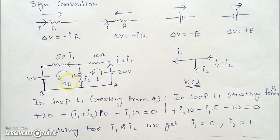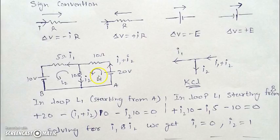For loop 2, starting from point B and moving in this direction, we first cross the resistance opposite to the direction of current, giving plus I2 times 10. Crossing the next resistance in the direction of current gives minus I1 times 5. Then jumping the battery from positive to negative terminal gives minus 10. The total equals zero as we return to point B. Solving these equations gives us I1 and I2.